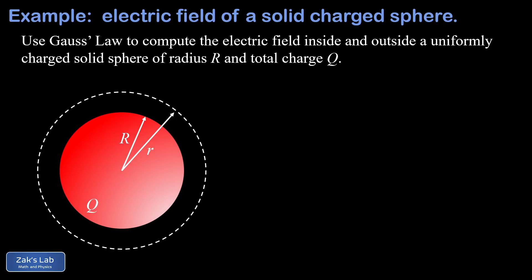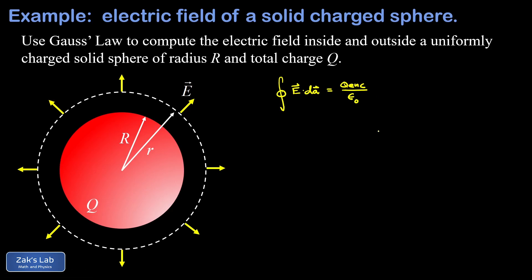We'll start with a surface outside the sphere sharing its center, then follow up with a surface inside. By choosing a surface with the same symmetry as the charge distribution, we guarantee that the electric field through this Gaussian surface is always perpendicular to the surface area elements and has a uniform magnitude. We then write down Gauss's Law: the integral of E·dA over the closed Gaussian surface equals the enclosed charge divided by ε₀.